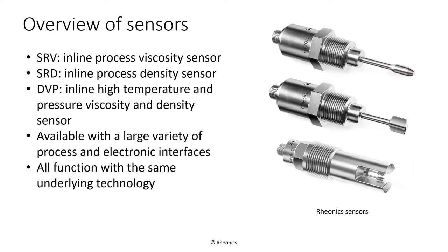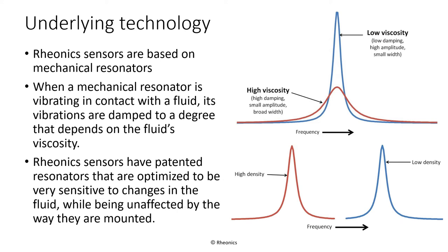Here is the lineup of Rhionics fluid sensors for inline process monitoring and control. SRV is a compact, robust inline process viscometer. SRD adds density to the measurement capabilities of SRV, to enable measurement and control of kinematic and dynamic viscosities, in addition to accurate density measurement. DVP is a density and viscosity sensor targeted for high pressure and temperature process measurements; its high sensitivity makes it especially suited for highly accurate measurements in fluids with lower viscosity and density. All Rhionics sensors are available with a large variety of process and electronic interfaces, and all function with the same underlying symmetric torsional resonator technology.